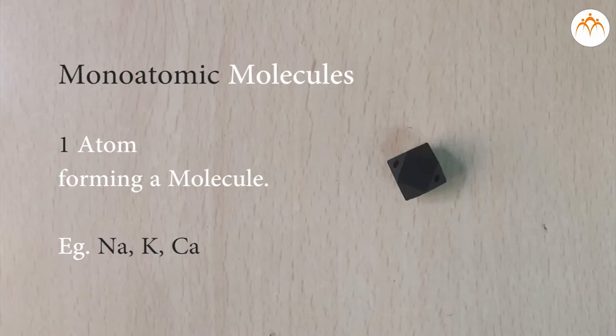When one atom forms one molecule is called as monoatomic molecule. Examples: Na, K, Ca.